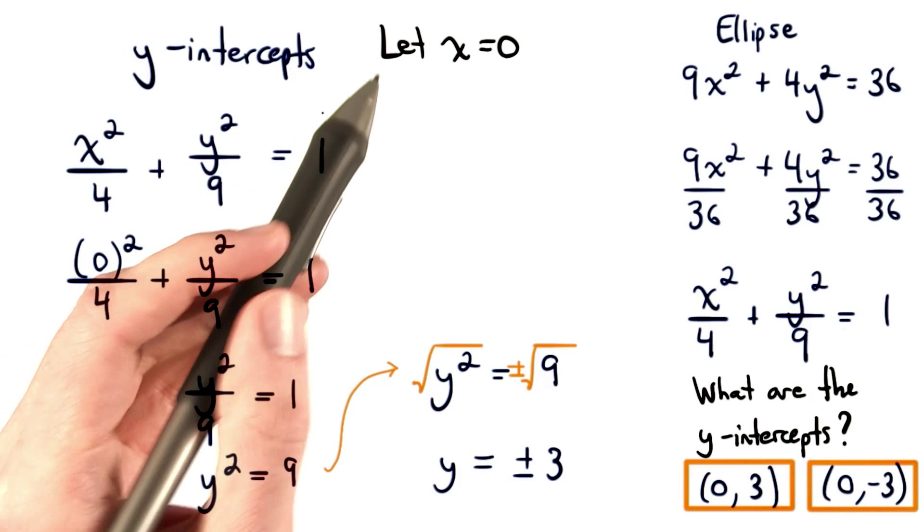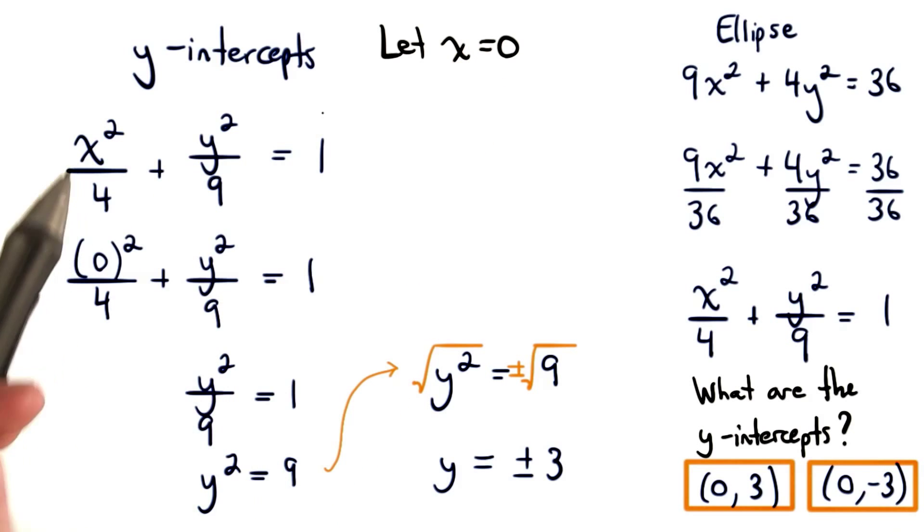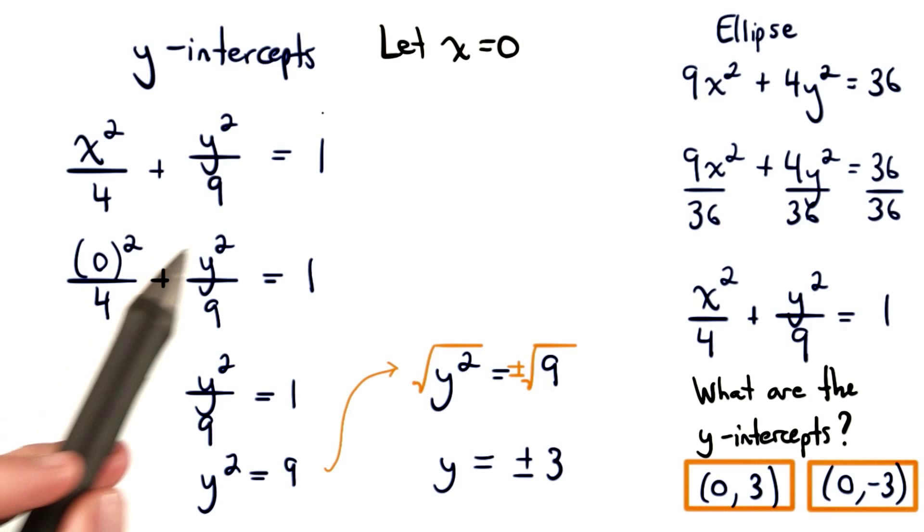We know for y-intercepts, we need to let x equal 0. So we set the value for x equal to 0, and then we solve for y.